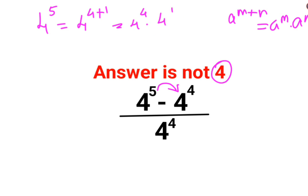So here what will happen is 4 raised to 4 is taken out and 4 raised to 1 is left. Minus, when you take the 4 raised to 4 out completely, you're just left with 1.